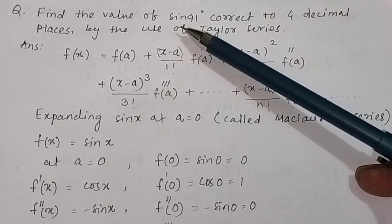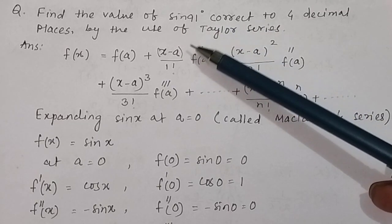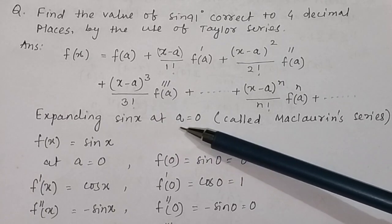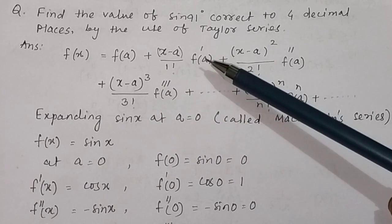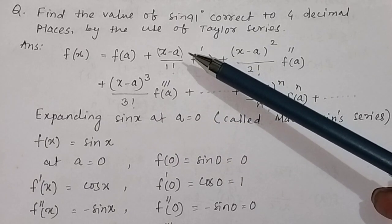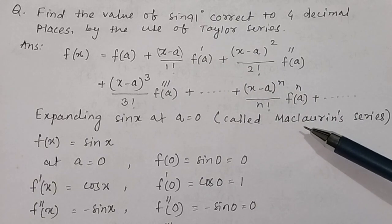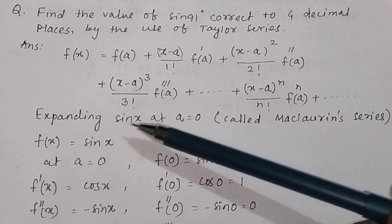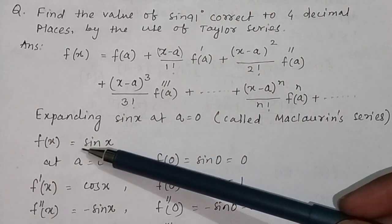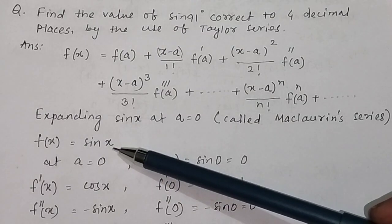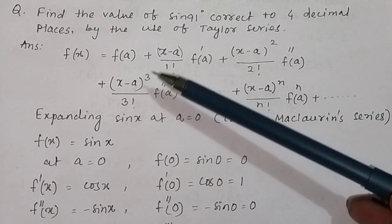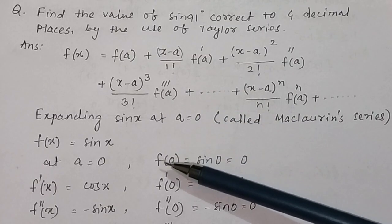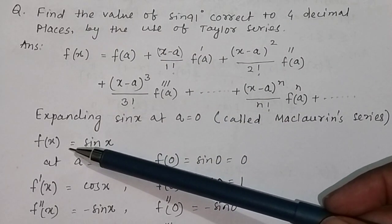To find the value of sin 91 degrees, we will expand sin x at a equal to 0. When a equals 0, the series is also called the Maclaurin series. Here the function is f(x) equal to sin x, with a equal to 0.